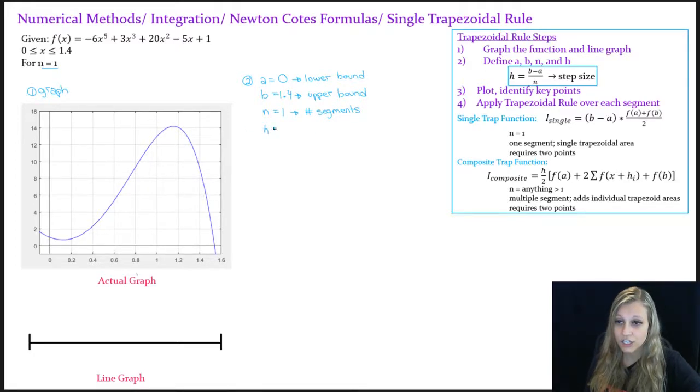And then h is my step size, or how big each segment is. And that is calculated using this equation over here, boxed in blue. And it's essentially the upper bound minus the lower bound divided by how many segments we have. So in this case our step size is 1.4 minus 0 divided by 1, and that gives us 1.4.